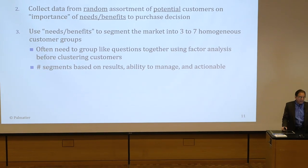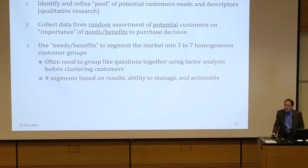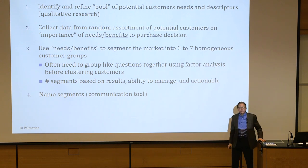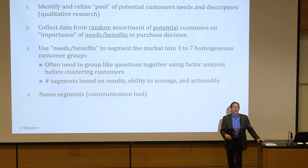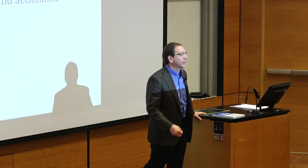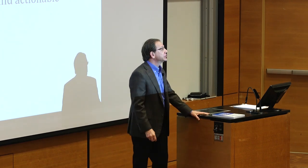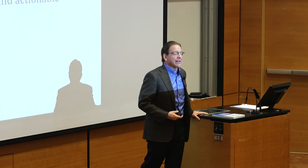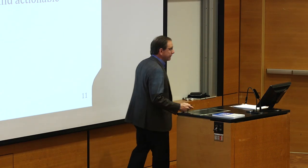After we number the segments based on results and manageability, we name them. We name them to keep track of them internally. Be careful because sometimes names leak to the public — you don't want to call them derogatory names like 'cheapskates' or 'penny pinchers.' Some actual companies have used such names and got caught. 'Value conscious segment' would be a more appropriate way to describe that group.